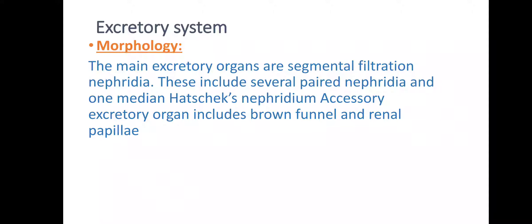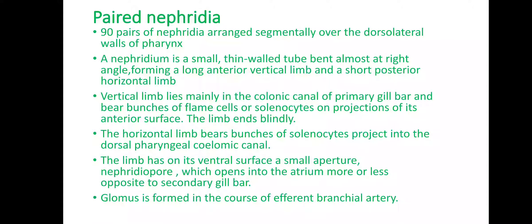The main excretory organ is filtration nephridia, also called proton nephridia. The second one is Hatschek's nephridium, which is median. The paired nephridia, which we call proton nephridia, there are 90 pairs of proton nephridia. These are segmentally arranged over the dorso-lateral wall of the pharynx — 90 pairs of nephridia present, segmentally arranged. Each nephridium is a small, thin-walled tube which is bent at a right angle.